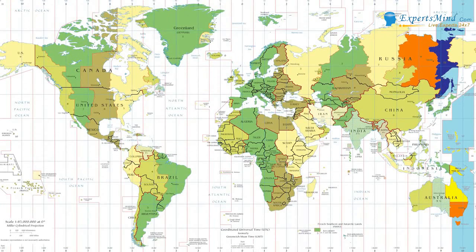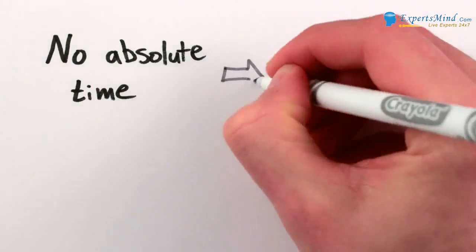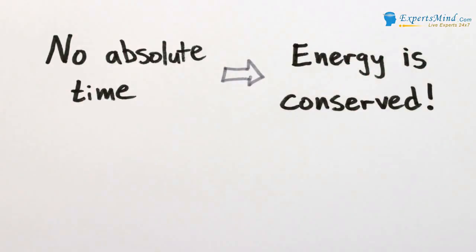I mean, if there were, time zones wouldn't work. In addition to allowing time zones, the fact that there's no absolute time also implies the law of conservation of energy.